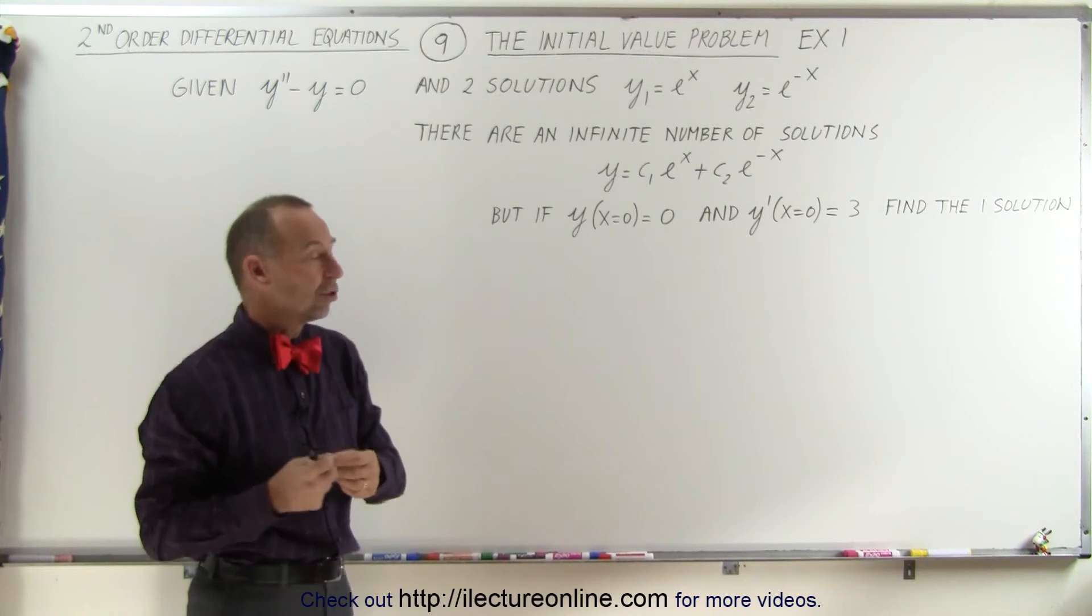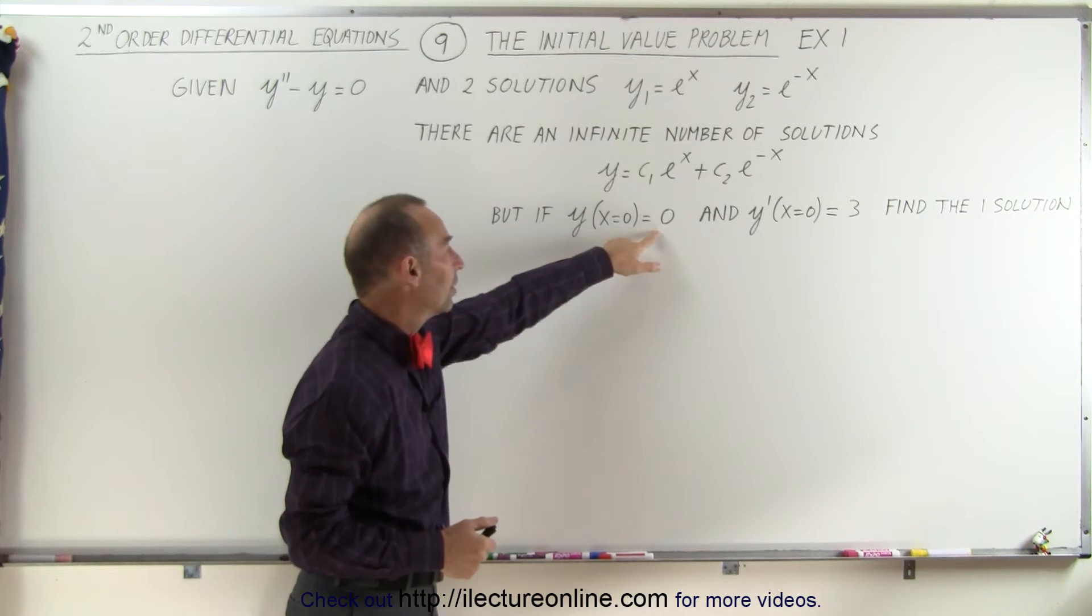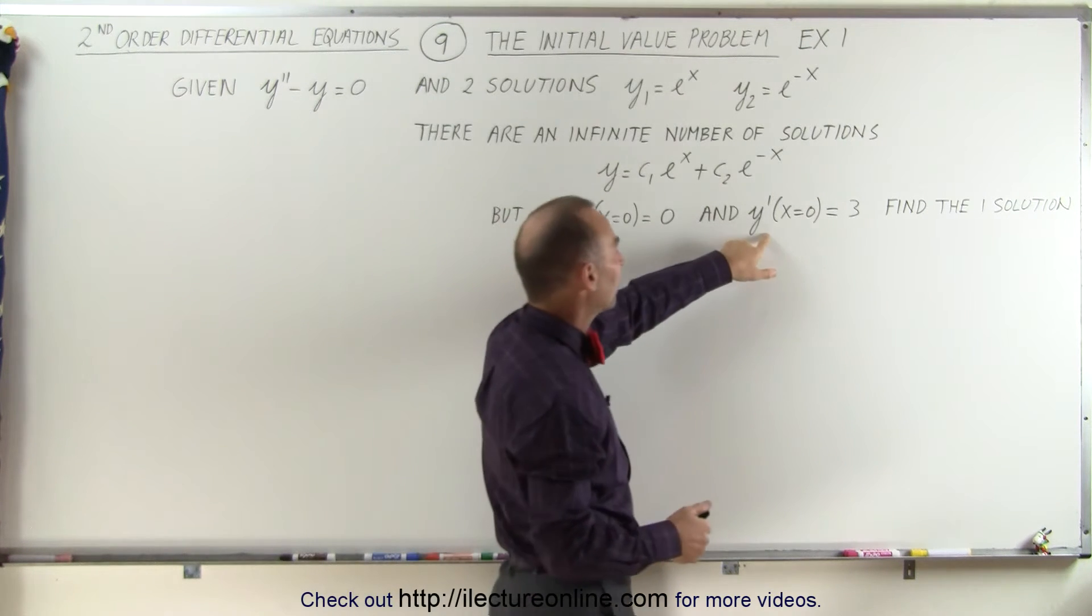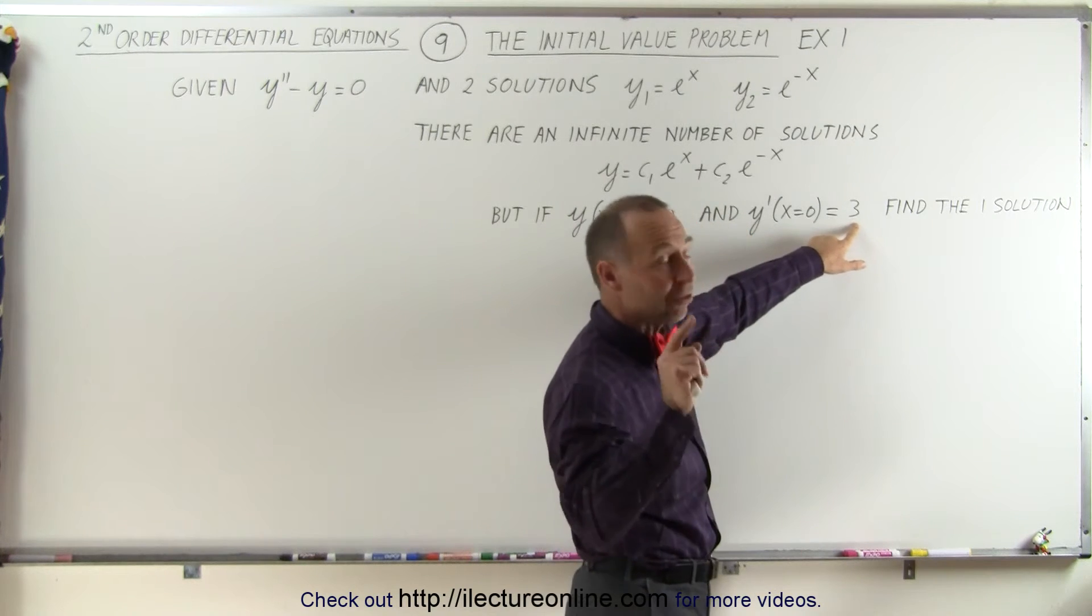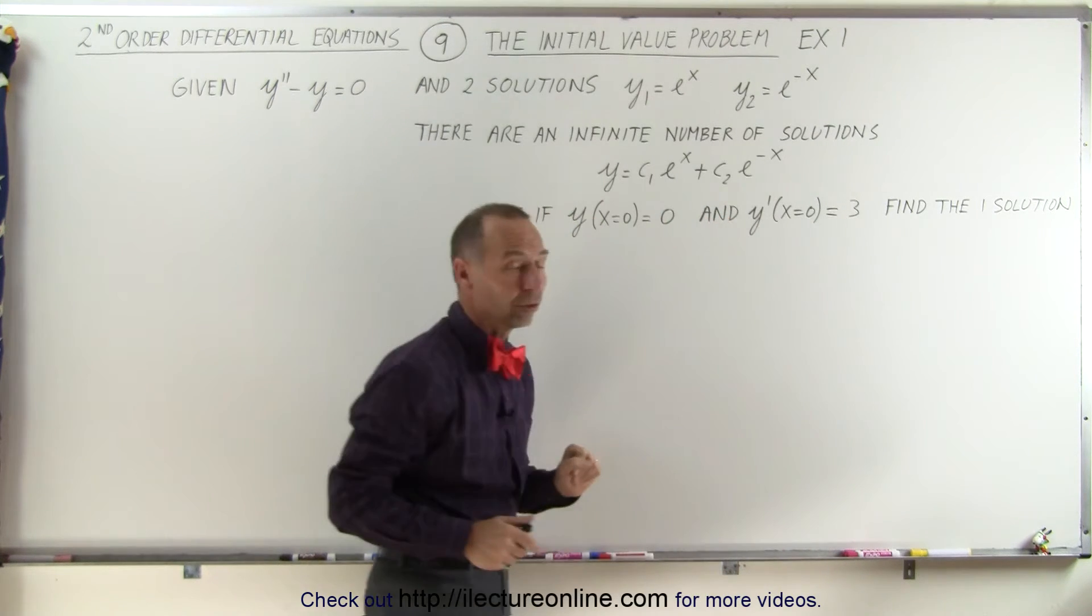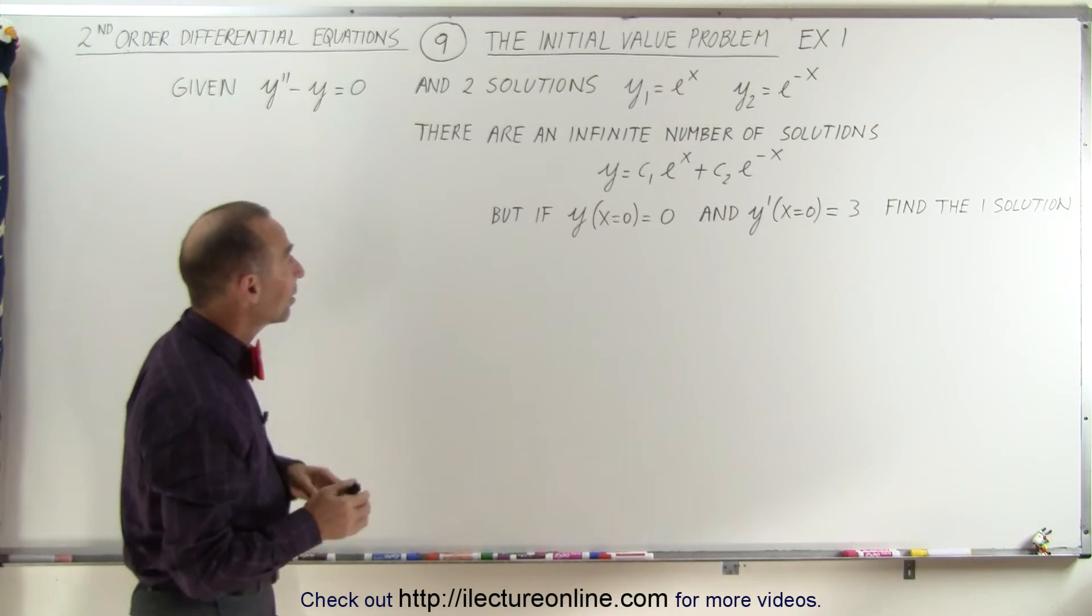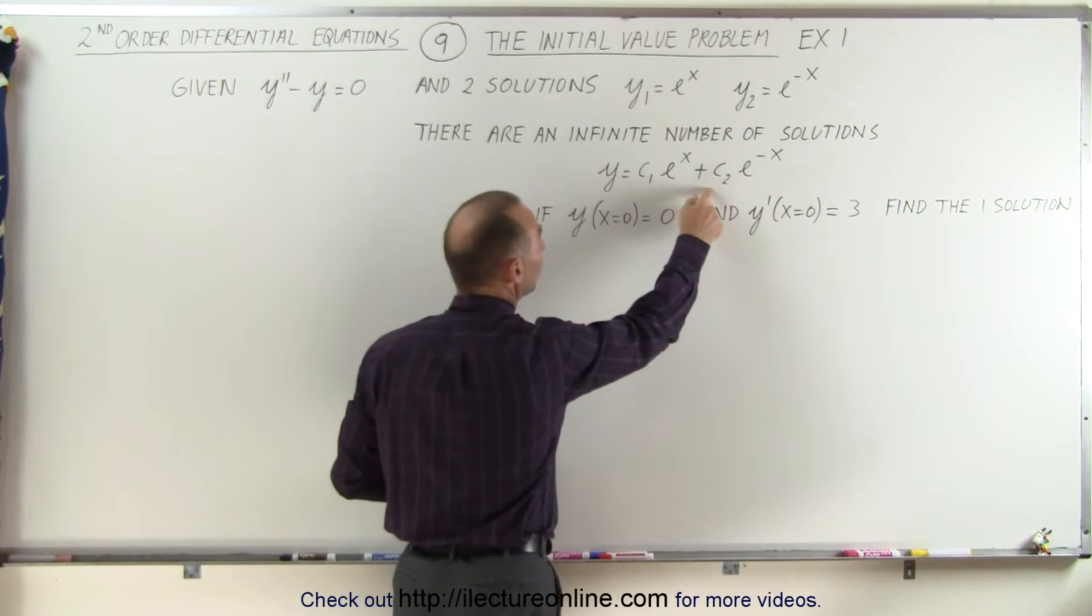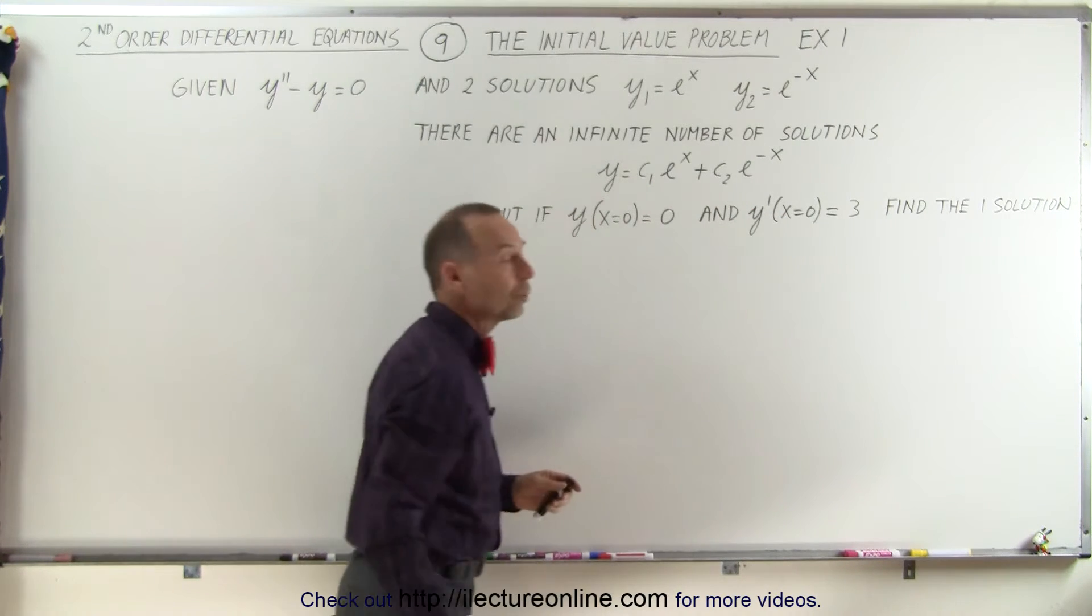But if we have these initial conditions, if the function evaluated at x equals 0 is equal to 0, and the derivative function at x equals 0 is equal to 3, then there's only one solution. So let's find that one solution. And what that means is we're going to find the exact values for c1 and c2, which gives us that unique solution that satisfies those two initial conditions.